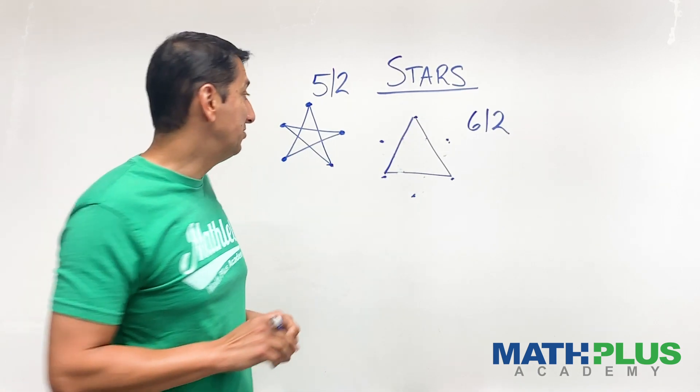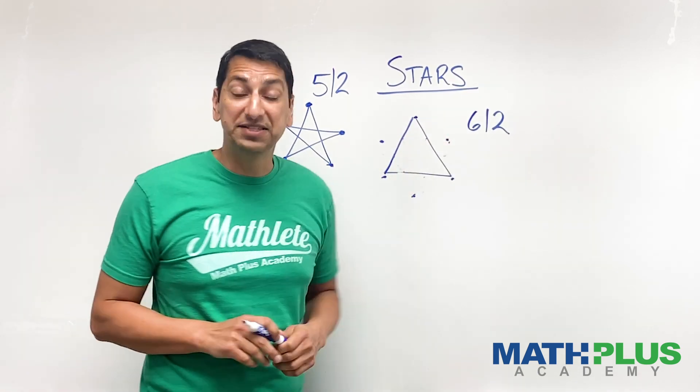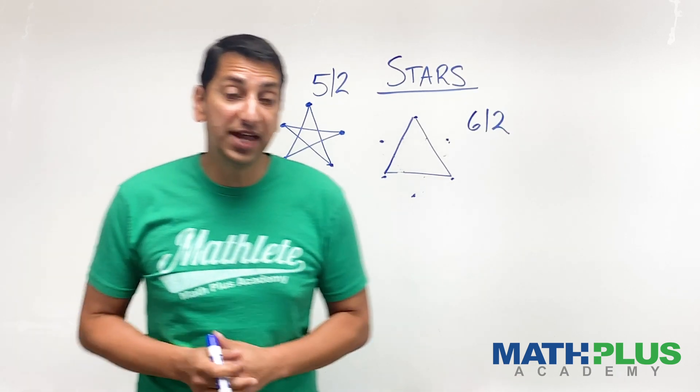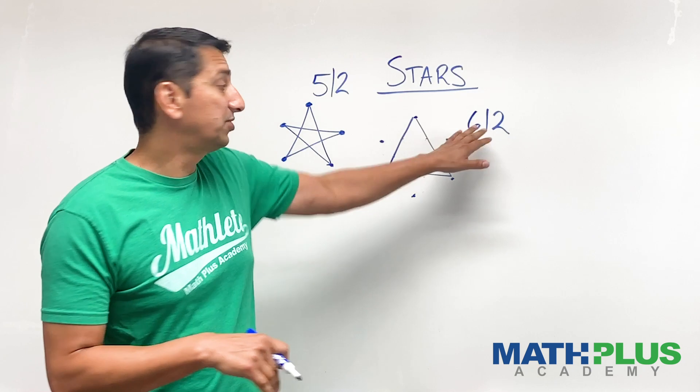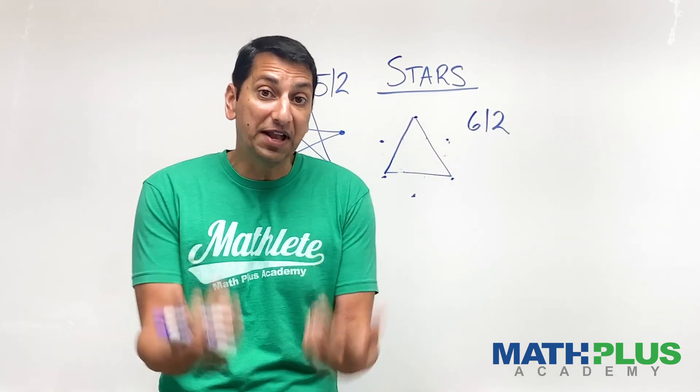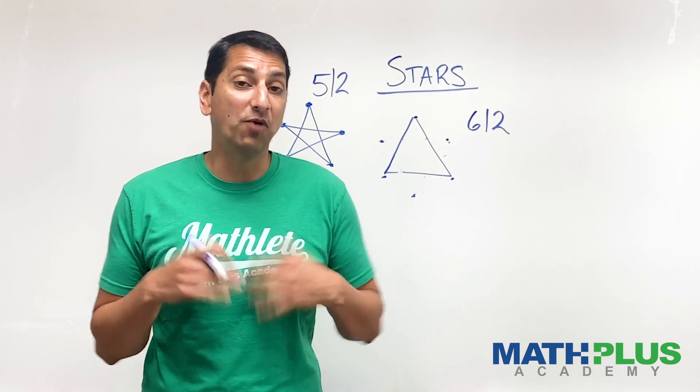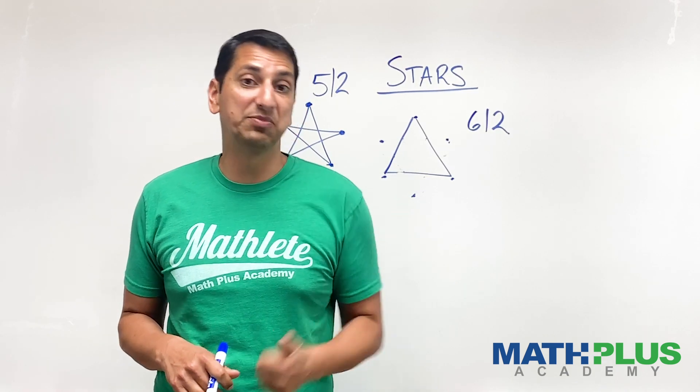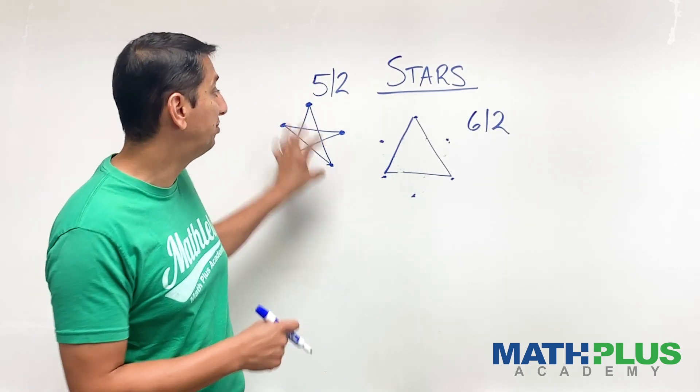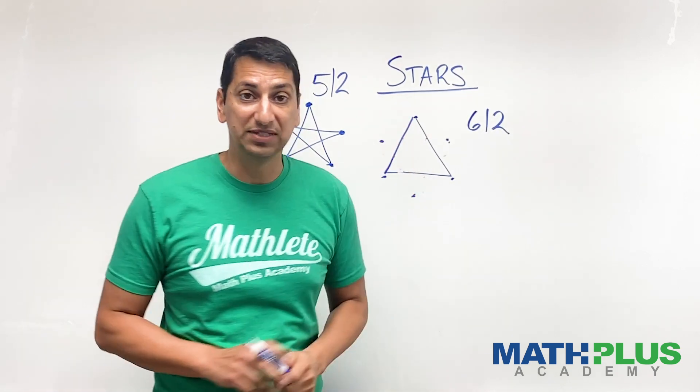But you might try a six three, a six four and see what other things you get. So challenge today is choose a certain number of people, change your skip number and see if you can develop an intuition for what the picture is going to look like. Will everyone get the ball? Will somebody be left out? Will the star that you make be kind of pointy or not so pointy?